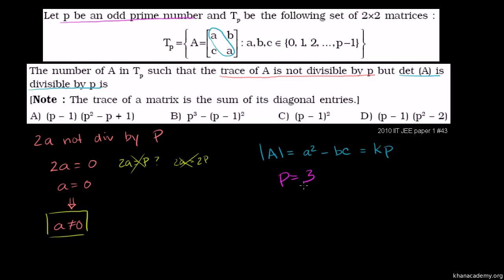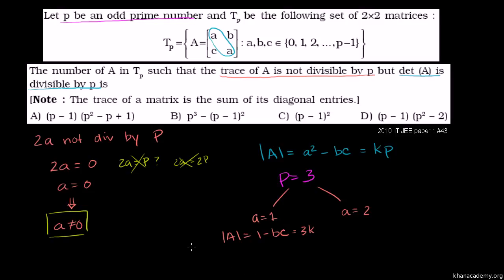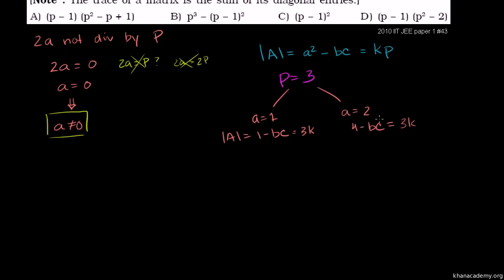With P equal to 3, our possibilities for A: A can't equal 0, so A could be 1 or A could be 2. If A equals 1, then the determinant equals 1 minus BC, which needs to equal some integer multiple of 3. If A equals 2, the determinant is 4 minus BC, which must also equal some integer multiple of 3. Let's find how many combinations of B and C satisfy each case.